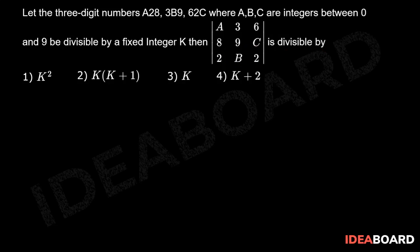Given the three-digit numbers A28, 3B9, 62C are divisible by K. Therefore, let A28 equals K into M1, 3B9 equals K into M2, 62C equals K into M3,